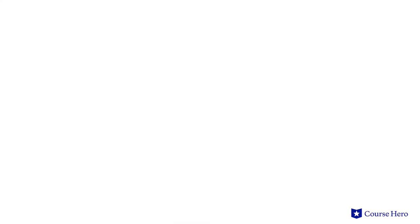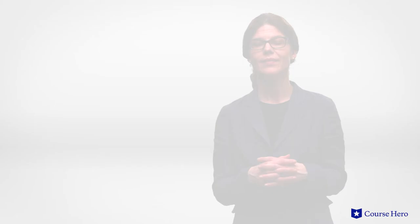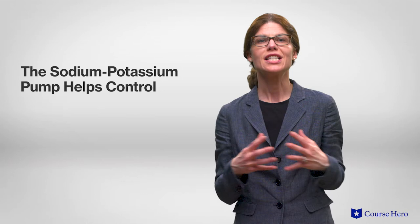As an example of a membrane protein that actively transports ions which contribute to the membrane potential, we're going to take a closer look at the sodium-potassium pump. Because sodium and potassium ions are constantly moving in and out of a cell, the cell relies on the use of a sodium-potassium pump to maintain the ideal concentration of these ions in living cells. This is important for control of cell volume, pH, and nutrient balance of the cell. The pump also helps generate voltages across cell membranes, crucial for the function of some cells such as nerve cells.